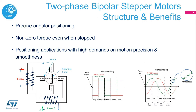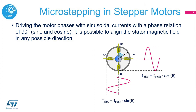Let's check out the benefits and structure of a stepper motor driver. By driving its phases with phase-shifted currents, bipolar stepper motors allow precise angular positioning and provide non-zero torque even when stopped, and thus keep the target position fixed. Moving from rectangular phase current waveforms to sine waves, a technique known as microstepping is possible, allowing even more precise positioning. The microstepping technique is based on applying two sinusoidal currents to the motor phases with a phase relation of 90 degrees.